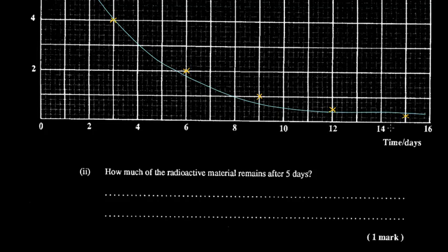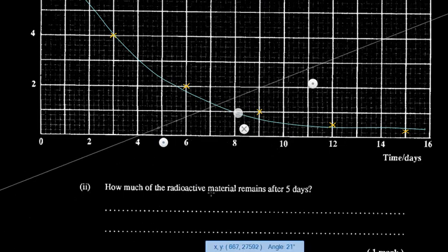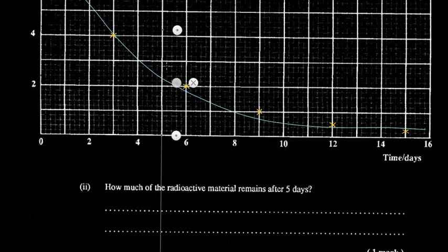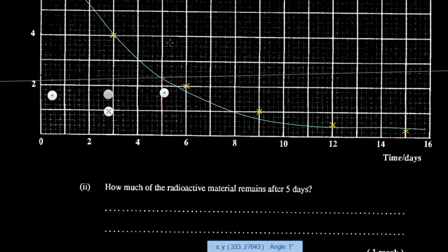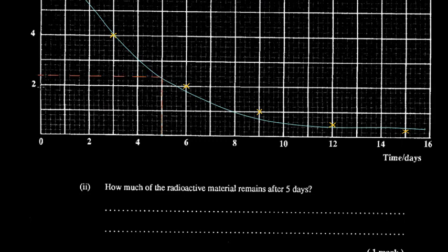The question asks how much radioactive material remains after five days. Using the graph, we find five days on the x-axis, draw a broken line straight up to the curve, then go straight across to the y-axis to read off the corresponding mass. Reading the graph, the mass is approximately 2.4 grams remaining after five days.